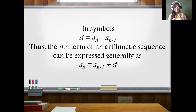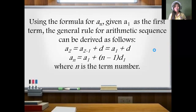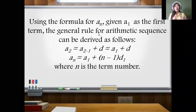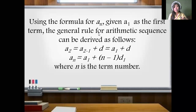A sub N is equal to A sub N minus 1, which is the preceding term, plus D. Using the formula for A sub N given A sub 1 as the first term, the general rule for arithmetic sequence is derived as: A sub N is equal to A sub 1 plus the quantity of N minus 1, times the common difference D. Here A sub 1 is the first term, D is the common difference, and N is the term number.